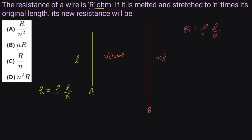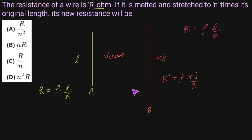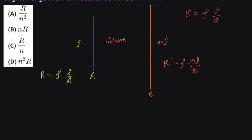If we apply the same formula for the new conductor — suppose its resistance is R' — this is going to be rho, because the material is the same so resistivity is still rho, the length has become n times the original, and the area of cross-section is b. So R' equals rho times nl upon b.